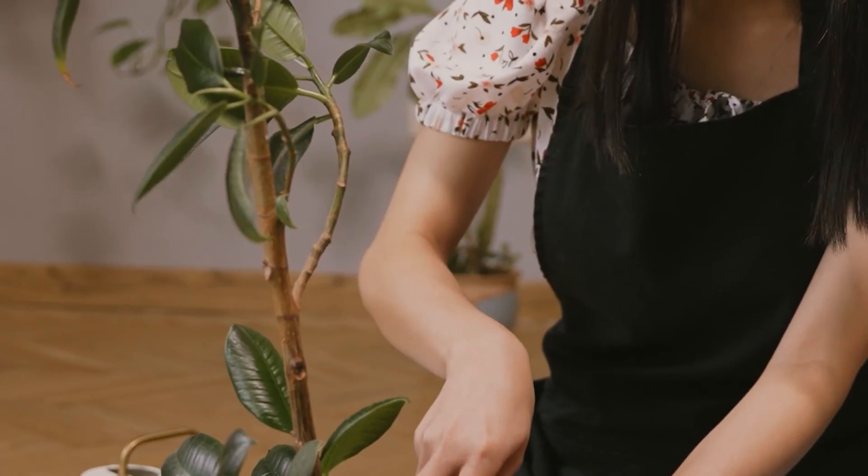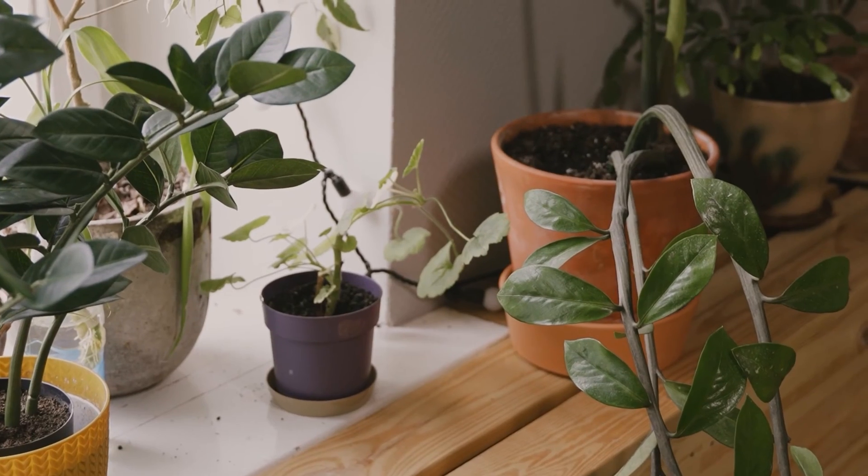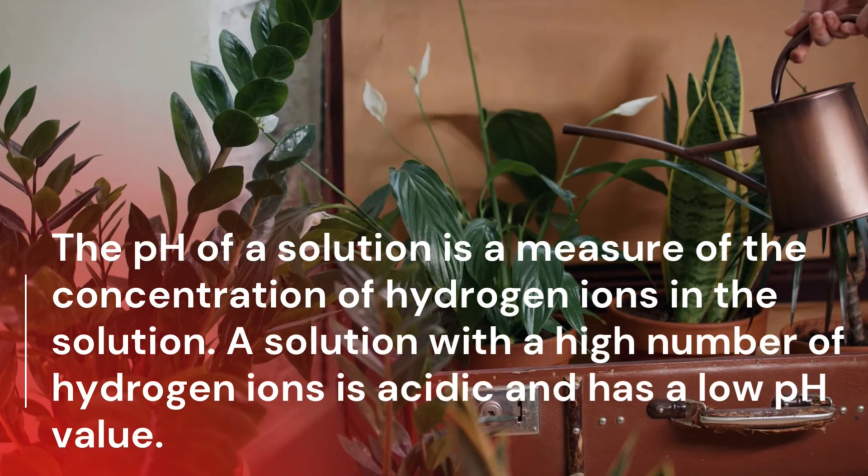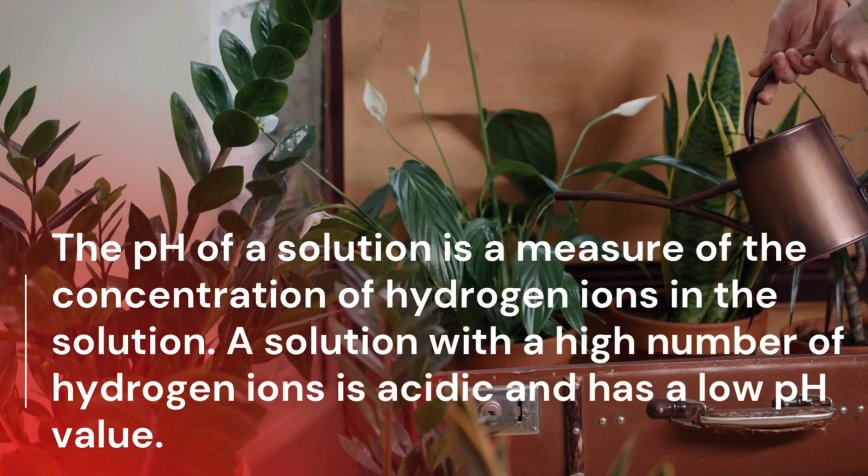pH is your determining factor as to whether or not your plant is getting any nutrients — macro or micronutrient. pH ultimately comes down to the availability of nutrients within the soil system. It's basically a way of calculating the number of hydrogen atoms within your soil. There is a scale of 0 to 14, and plants like to fall between 6 and 7.5.